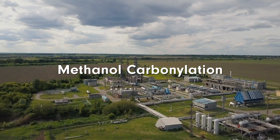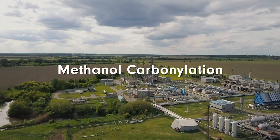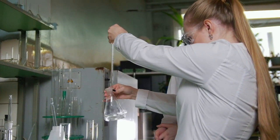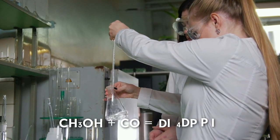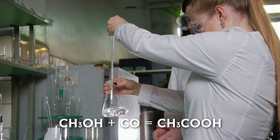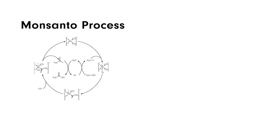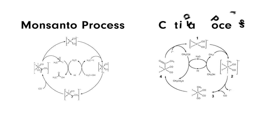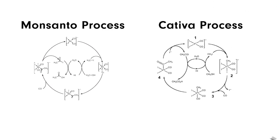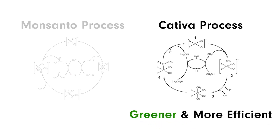Acetic acid is typically produced by methanol carbonylation. In this process, methanol and carbon monoxide react to produce acetic acid according to the following equation. There are two related processes for carbonylation of methanol: the rhodium-catalyzed Monsanto process and the iridium-catalyzed Cativa process. The latter process is greener and more efficient and has largely supplemented the former process, often in the same production plants.